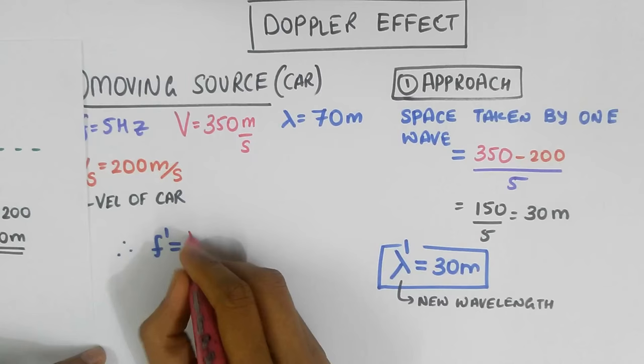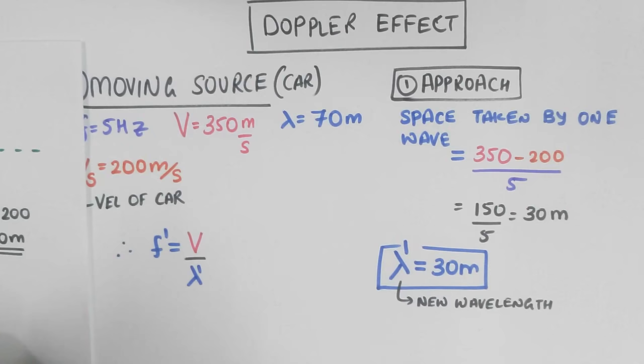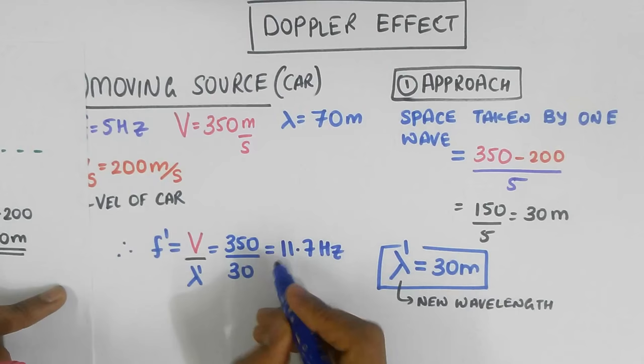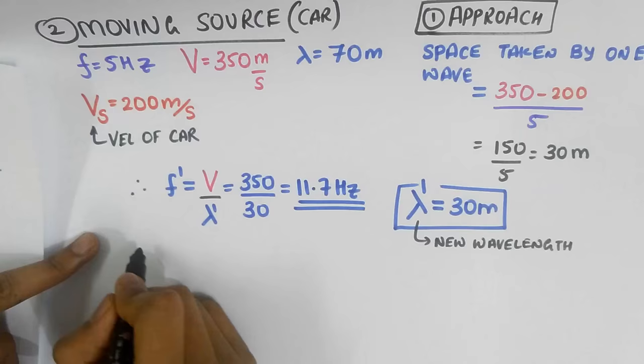But now we will substitute for Lambda, Lambda Prime. Thus, F Prime, the new registered frequency, becomes V divided by Lambda Prime equals 350 divided by 30 equals 11.7 Hertz. Ooh, notice that I register a higher frequency than 5 Hertz.